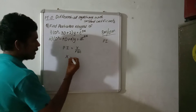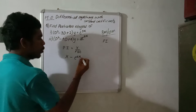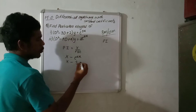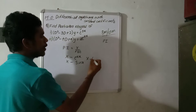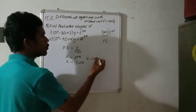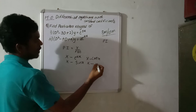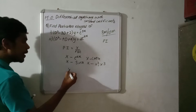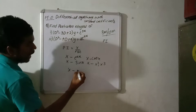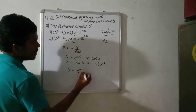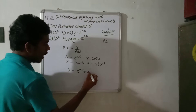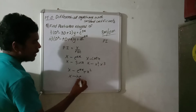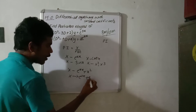The different cases for X(D) are: x equals e^(ax), or x equals sin x, or x equals cos x, or x equals x² or x³, or x equals e^(ax) times x², and x equals e^(ax) times 4x. We will solve each method.